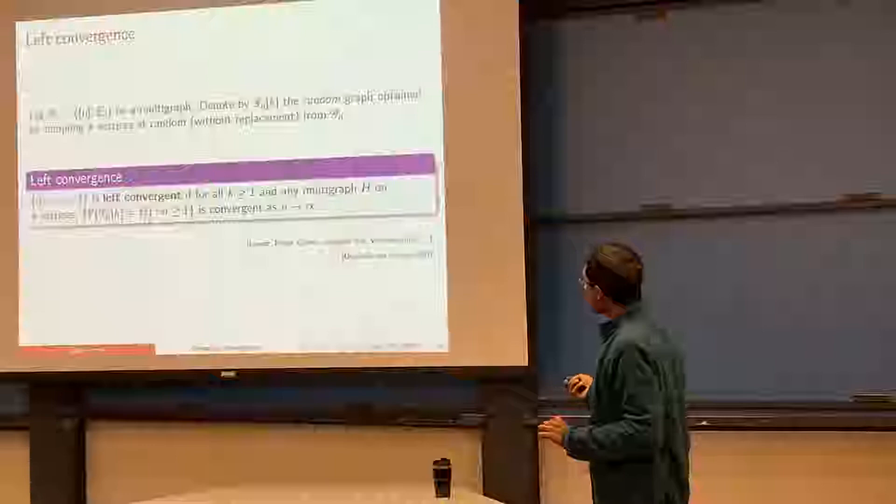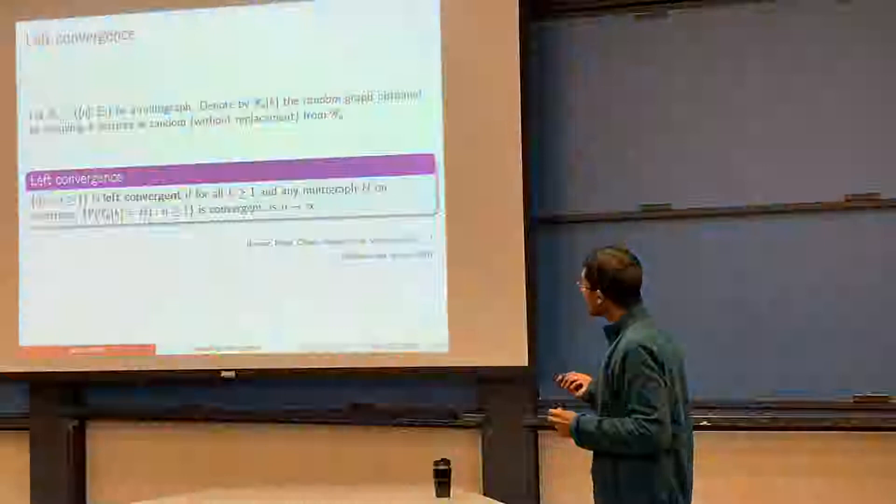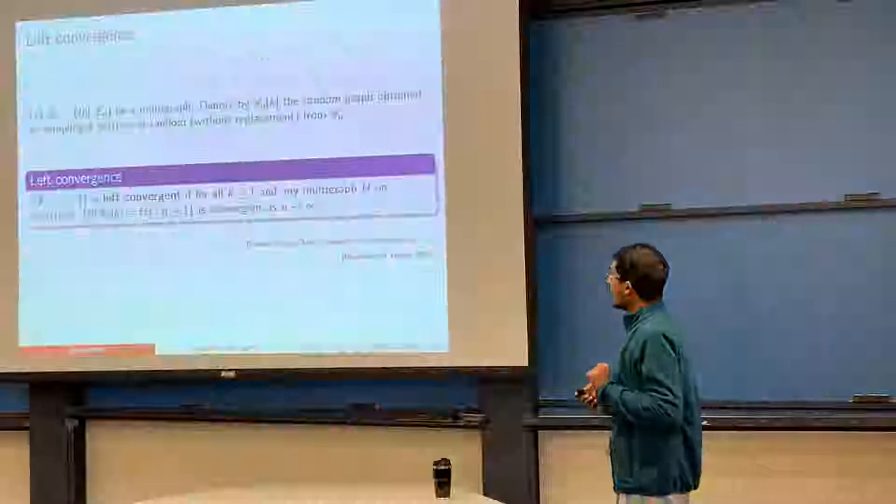This notion was introduced in a very different form in the early 2000s by Lovász and co-workers. This alternative formulation comes from Péré and Svante Janssen, who reformulated the notion of left convergence and pointed out connections to classical notions in probability such as the Aldous-Hoover theorem and exchangeability.